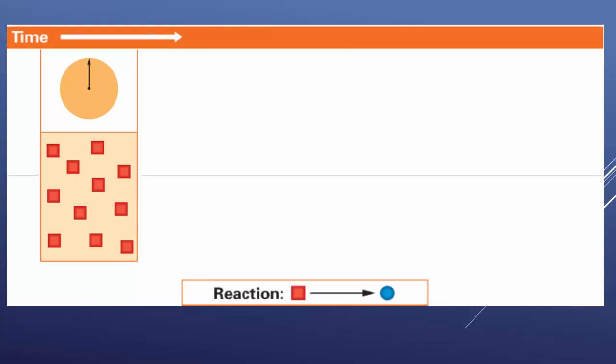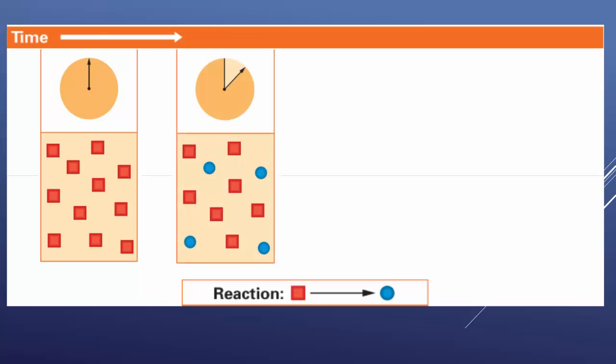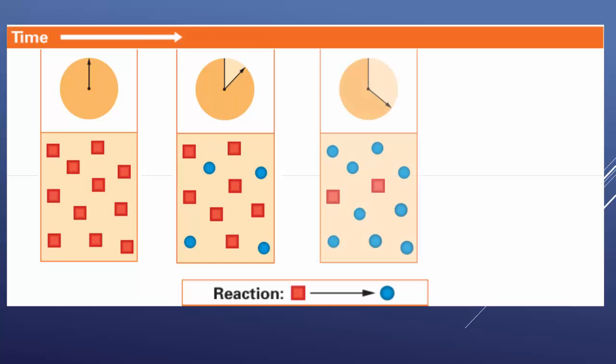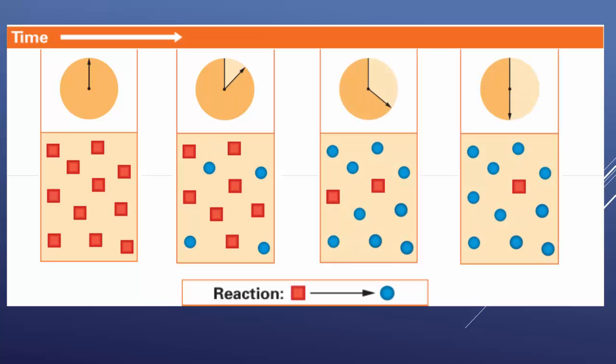In this diagram, we're showing that we're starting with one type of substance, which we're going to call square. As the square substance starts to react, as time progresses, the square substances are turning into the circle substance. Eventually we make mostly all circle substance. All rates are really dependent on those collisions that can be created.